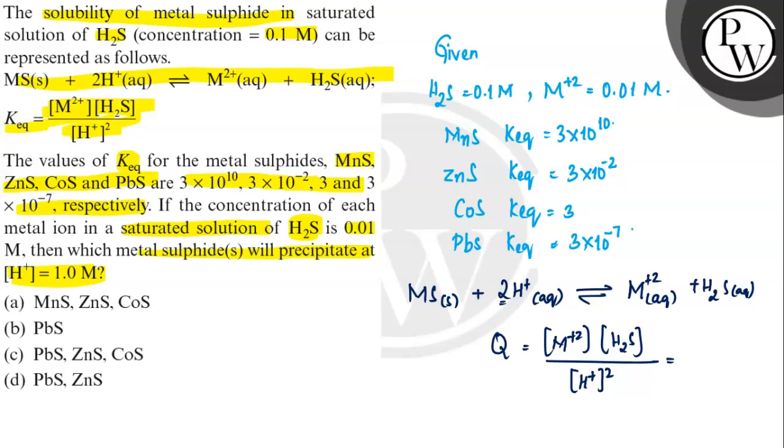That is 0.01 times 0.1 divided by H+ concentration which is 1.0, all squared. So Q value is 10^-3.